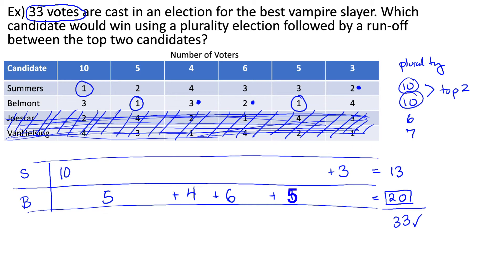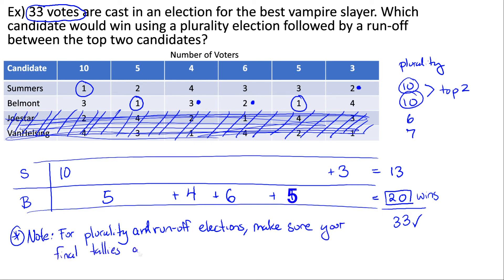It's especially important to check your work when doing runoff problems. A common mistake is to count some groups but forget others — for instance, forgetting rows where voters' first and second choices were eliminated. Everybody needs to vote again in the runoff election. Even voters whose top choices were eliminated will still come back and vote for whichever candidate they prefer most. Always make sure your final tallies add up to the correct number of votes.